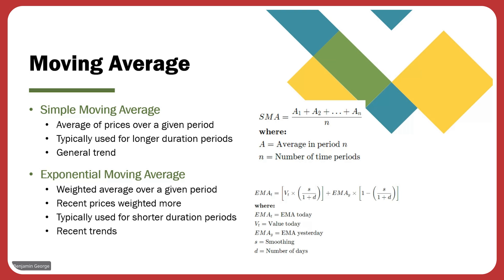The other type of moving average is the exponential moving average, which is typically more often used for comparing recent price action to price action from previously. In an exponential moving average, the equation weights recent prices more than the previous price. That's typically used for identifying recent trends.